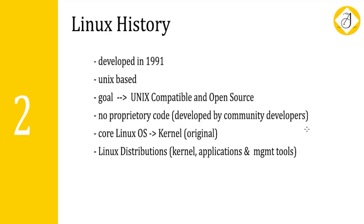They kept the core Linux operating system as the kernel — the kernel is the original part and has been developed by community developers. The Linux community designed this operating system to run efficiently and reliably on all PC hardware, and it is also able to run on a variety of other platforms. Since it was developed by a community of developers, it has no proprietary code — no one could own the copyright of this Linux version. There are several distributions of Linux which include the kernel and different application programs and management groups.